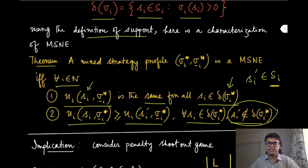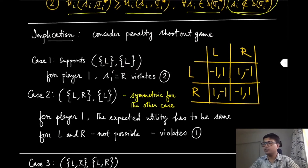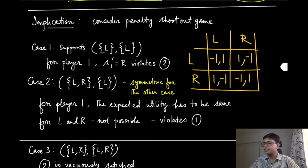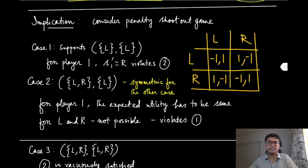We will prove this result in the next module, but let us see how it is useful. This characterization result is very useful in finding the mixed strategy Nash equilibrium in a normal form game. Let us go back to the penalty shootout game. This theorem does not tell you what the supports will be; it says that for whichever support the MSNE is on, the probability masses must satisfy certain conditions. To find the MSNE, we iterate over all possible support profiles.